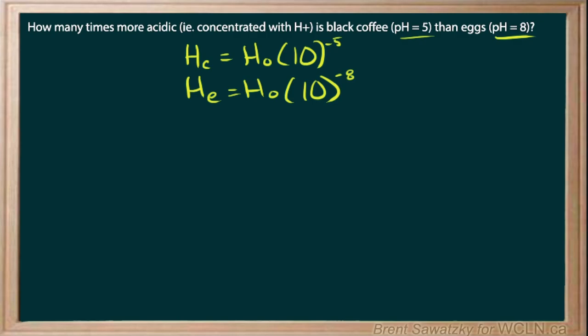So how many times more acidic? We'll put the coffee on top—it's the more acidic one—and the eggs on the bottom. We just fill in our equations for those. And there we go. This is what we're trying to solve.